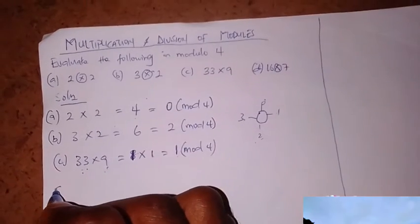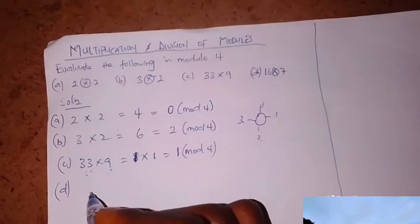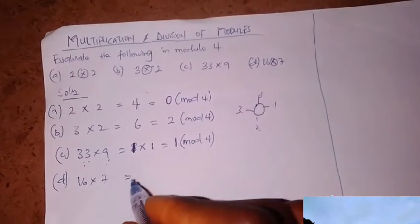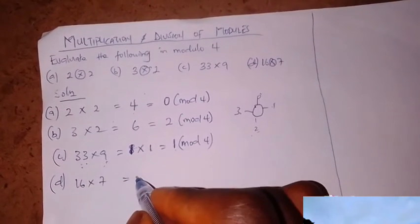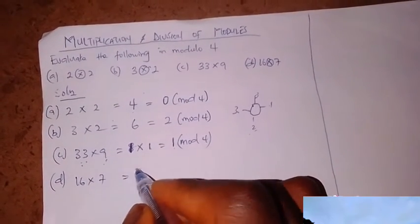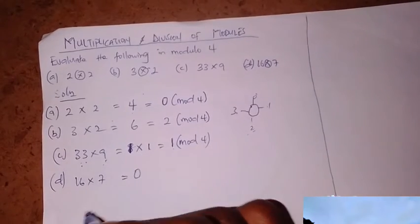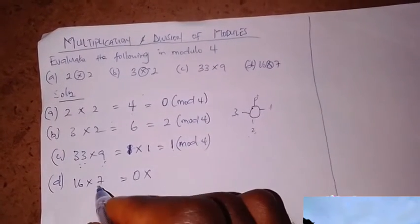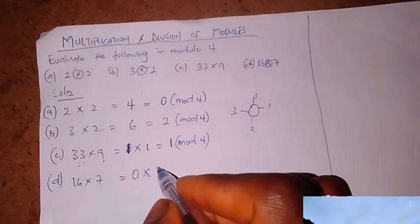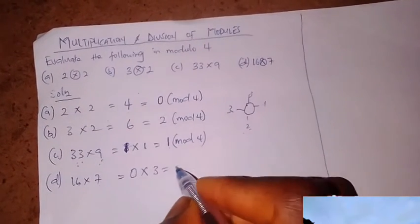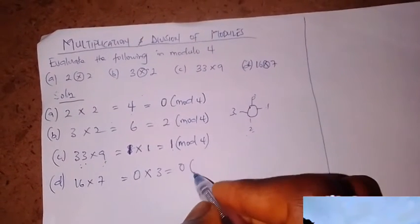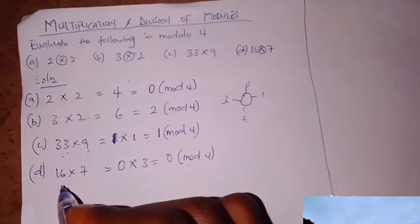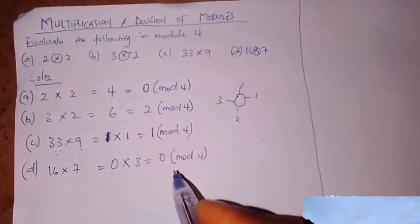For question D, we have 16 times 7. Same approach: 16 in modulo 4 is 0. And 7 in modulo 4 is 3 (4 goes into 7 once, remainder 3). So 0 times 3 is 0, and 0 in modulo 4 is 0. So 16 times 7 in modulo 4 is 0. That's all for multiplication.